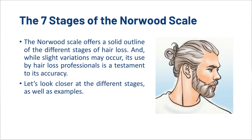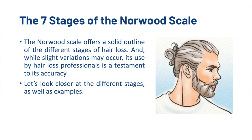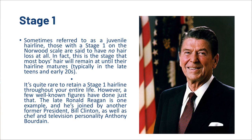The Norwood Scale offers a solid outline of the different stages of hair loss and while slight variations may occur, its use by hair loss professionals is a testament to its accuracy. Stage 1, sometimes referred to as a juvenile hairline, means no hair loss at all. This is the stage that most boys' hair will remain at until their hairline matures, typically in the late teens and early twenties. It's quite rare to retain a stage 1 hairline throughout your entire life, however a few well known figures have done just that — Ronald Reagan, Bill Clinton, and Anthony Bourdain.